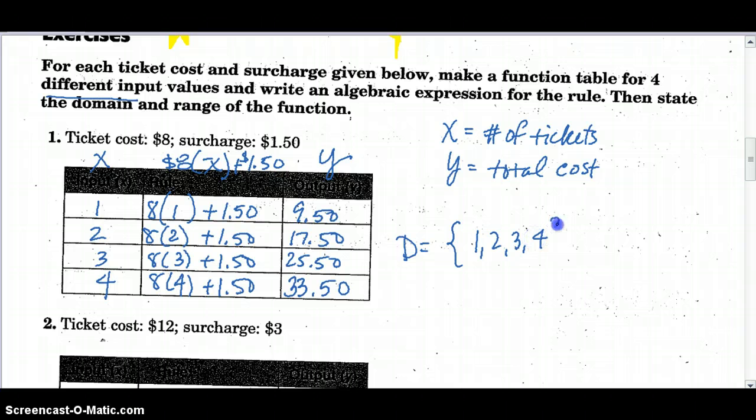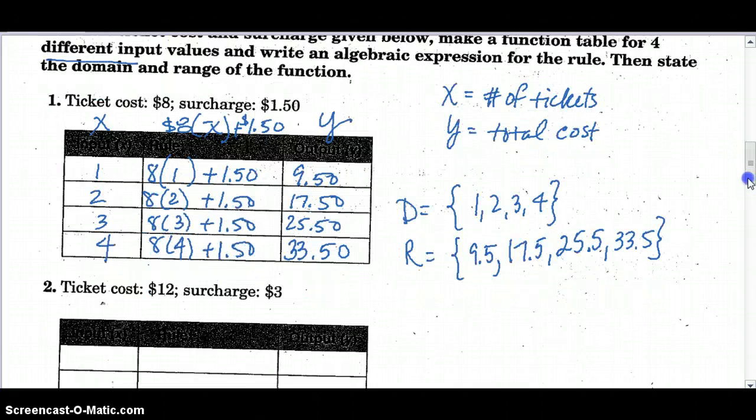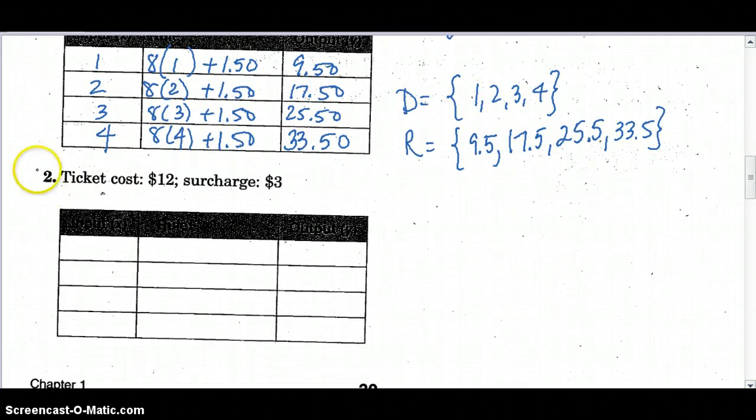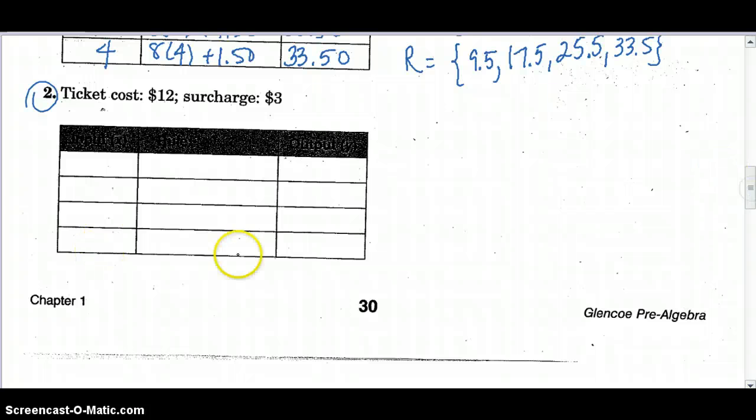One, two, three, and four. And my range, 9.5 because that zero isn't doing anything for us, 17.5, 25.5, and 33.5. That's my range. I'm going to leave example two for you to do. So when I check your notes tomorrow, be sure you have attempted to fill in the chart for example two. But I do want you to use one, two, three, and four for your input values. So as you finish up and turn over to the back.